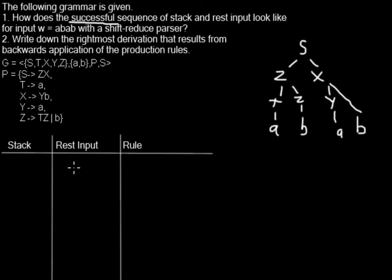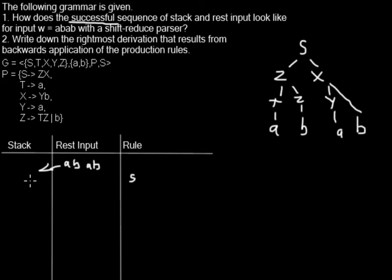We start with the rest input, which is just the full input string ABAB. The first step we can perform is called shift. Shift-reduce parsing contains exactly two rules: shift and reduce. Shift means I'm shifting the leftmost symbol from the rest input onto the stack. So on the second line I have an A on the stack and the rest input is now BAB.